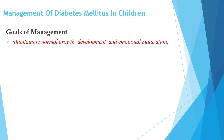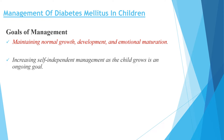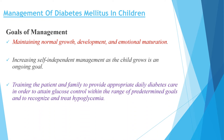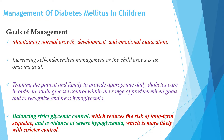The goals of management of DM in children include maintaining normal growth, development, and emotional maturation; increasing self-independent management as the child grows; and training the patient and family to provide appropriate daily diabetes care to attain glucose control within predetermined goals and to recognize the three types of glycemia. Balancing strict glycemic control — which reduces risk of long-term sequelae — and avoidance of severe hypoglycemia, which is more likely with stricter control, should be discussed with the family.